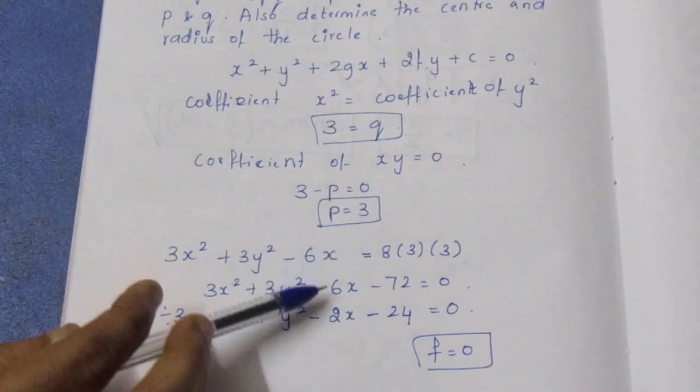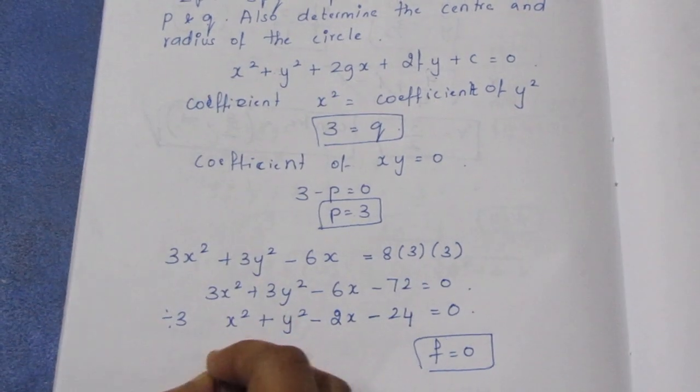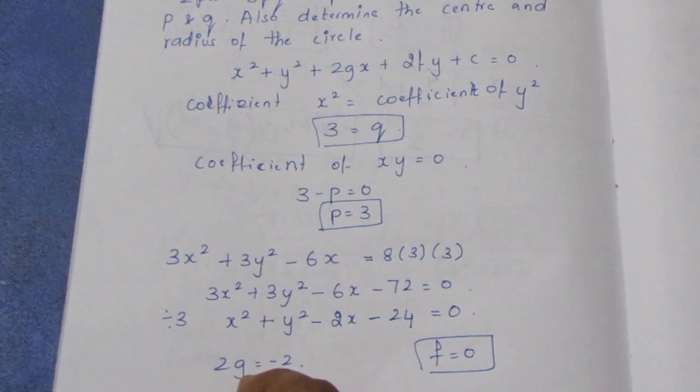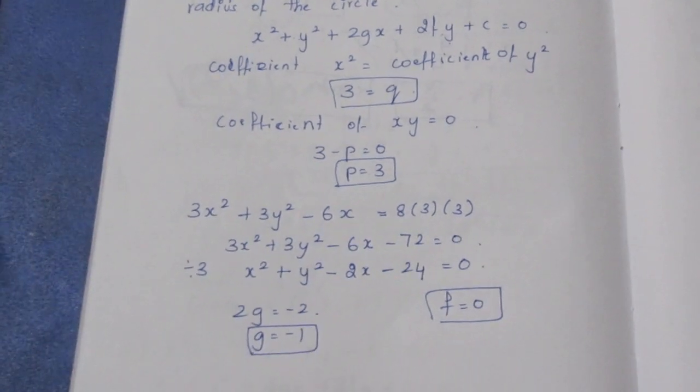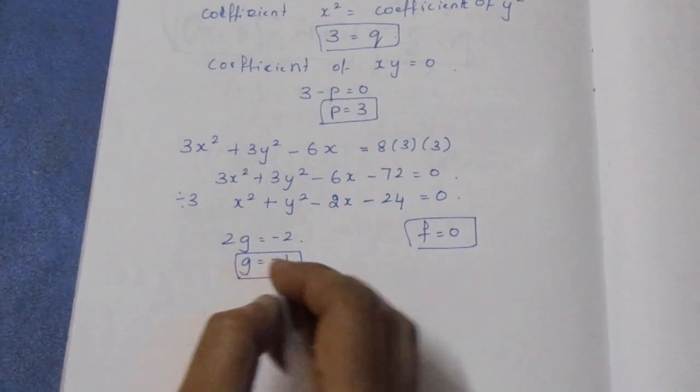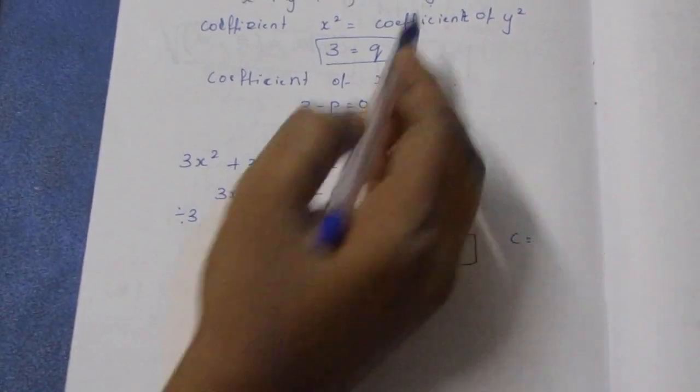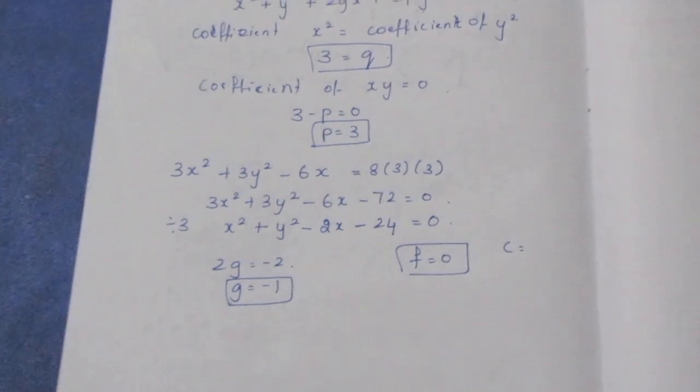From this equation, 2g = -2, so g = -1. The coefficient of 2fy = 0, so f = 0. And c, the constant term, equals -24.